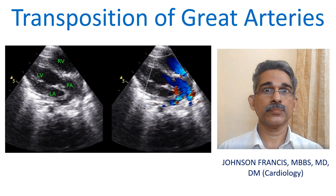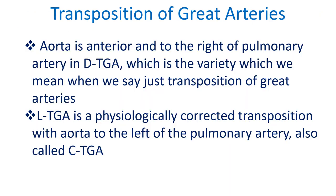In transposition of great arteries, the pulmonary artery arises from the left ventricle and the aorta arises from the right ventricle. The aorta is anterior and to the right of the pulmonary artery in DTGA, which is the variety we mean when we say just transposition of great arteries.